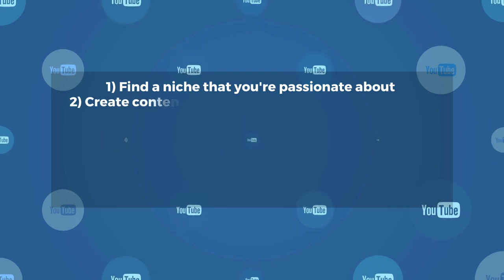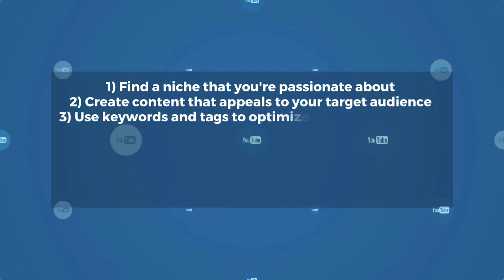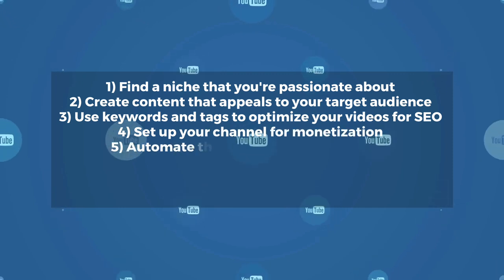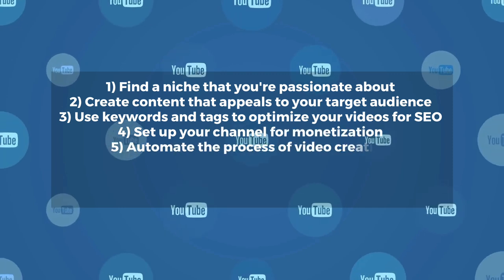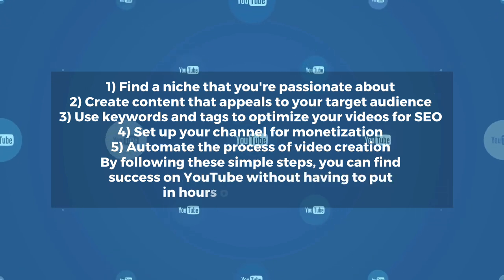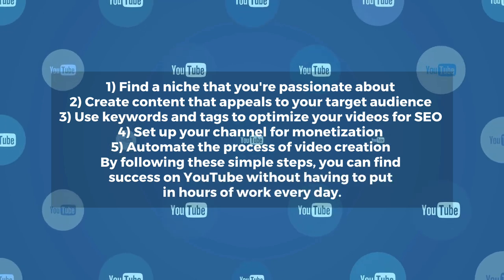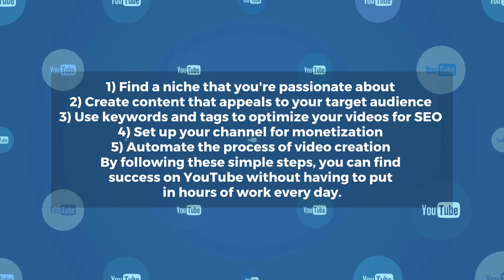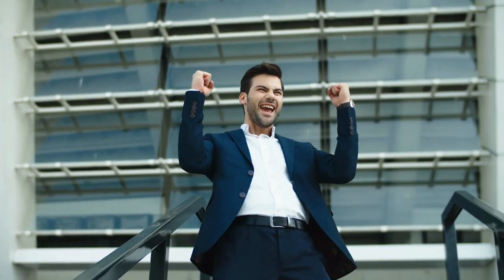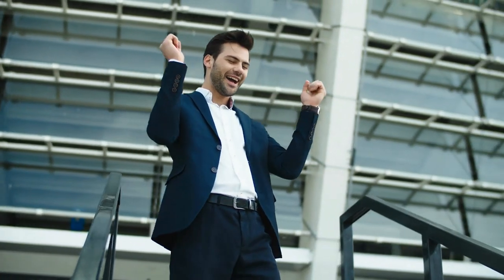Step 1: Find a niche that you're passionate about. Step 2: Create content that appeals to your target audience. Step 3: Use keywords and tags to optimize your videos for SEO. Step 4: Set up your channel for monetization. Step 5: Automate the process of video creation. By following these simple steps, you can find success on YouTube without having to put in hours of work every day.